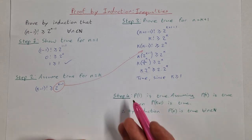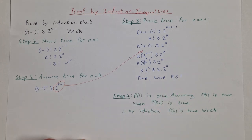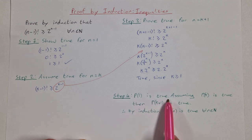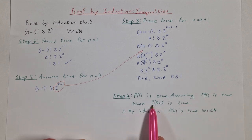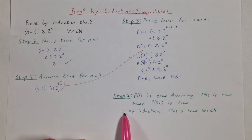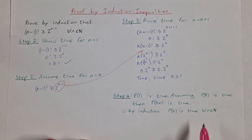Step 4, as usual, is the same: P(1) is true. Assuming P(k) is true, then P(k+1) is also true, and therefore by induction, P(n) is true for all n ∈ ℕ.